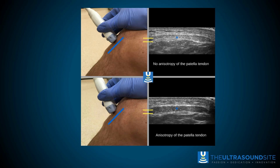Here is a depiction of this when scanning a patellar tendon. In the top image, the ultrasound probe is perfectly perpendicular to the tendon and we get a really nice, bright hyperechoic appearance between the two yellow parallel lines. In the image below, the probe has been angulated around 10–15 degrees and the tendon looks hypoechoic. This could easily be misinterpreted as pathology or even a tendon rupture.